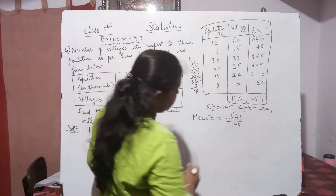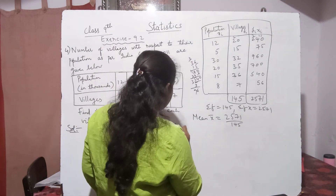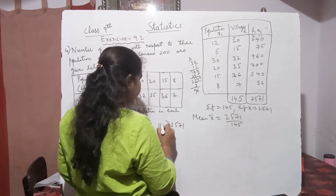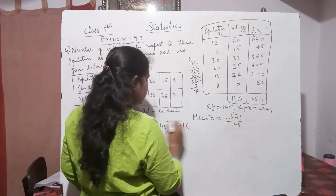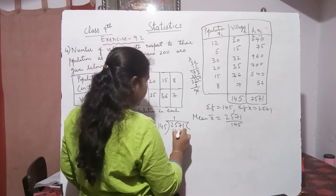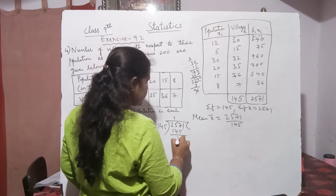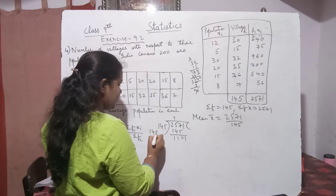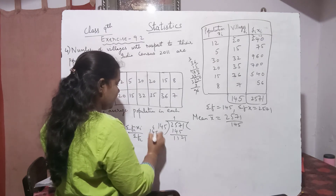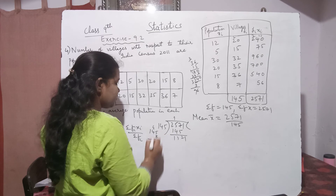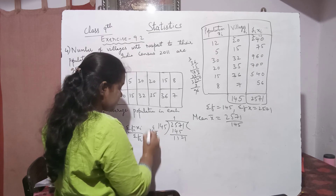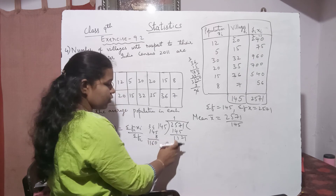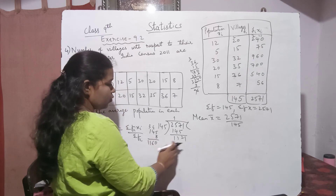Now simplify 2571 ÷ 145. It goes once — 1 × 145 = 145. Then try 145 × 8 = 1160, which is more than 1121. So try 145 × 7 = 1015.